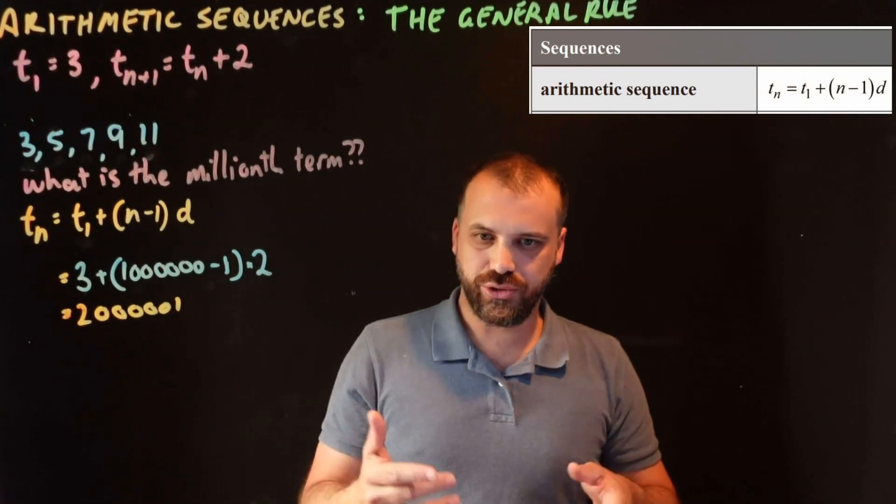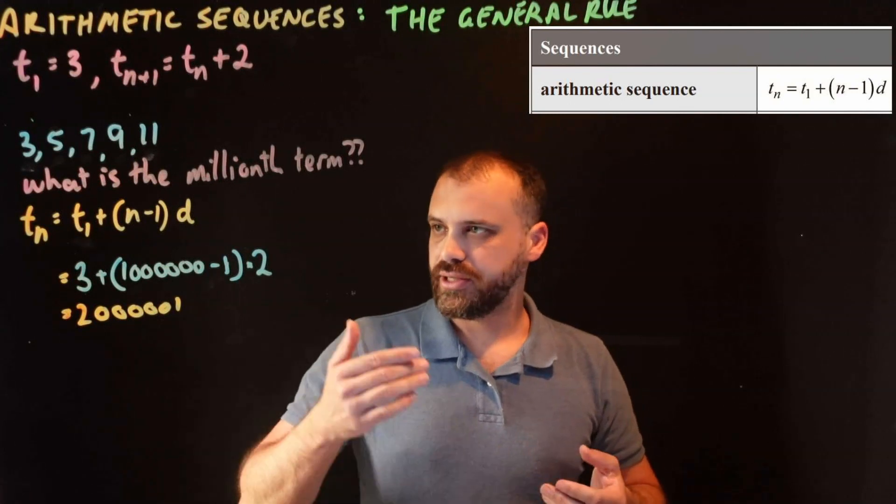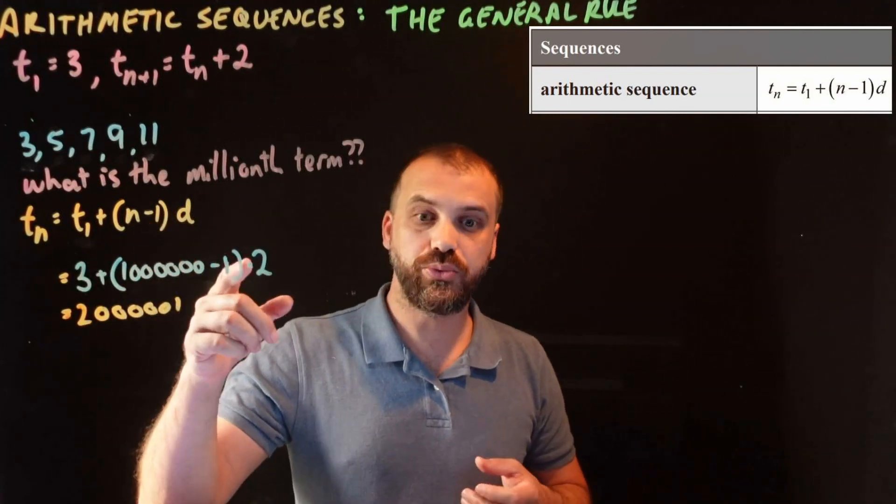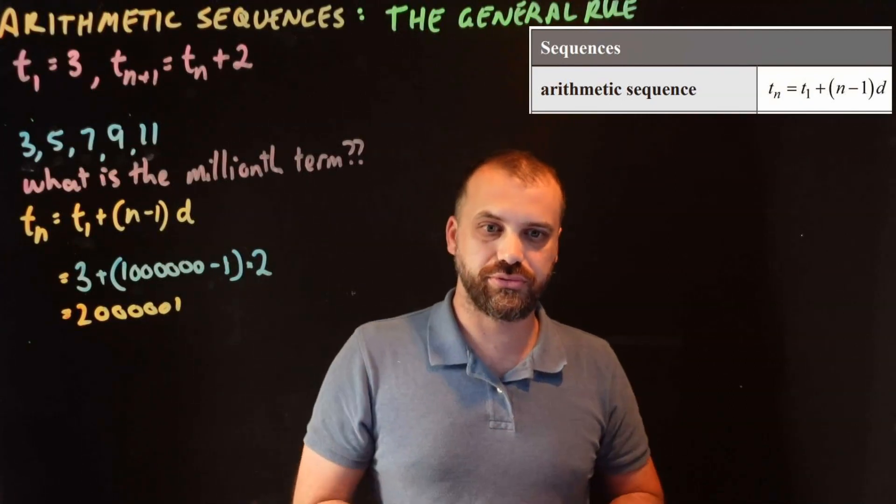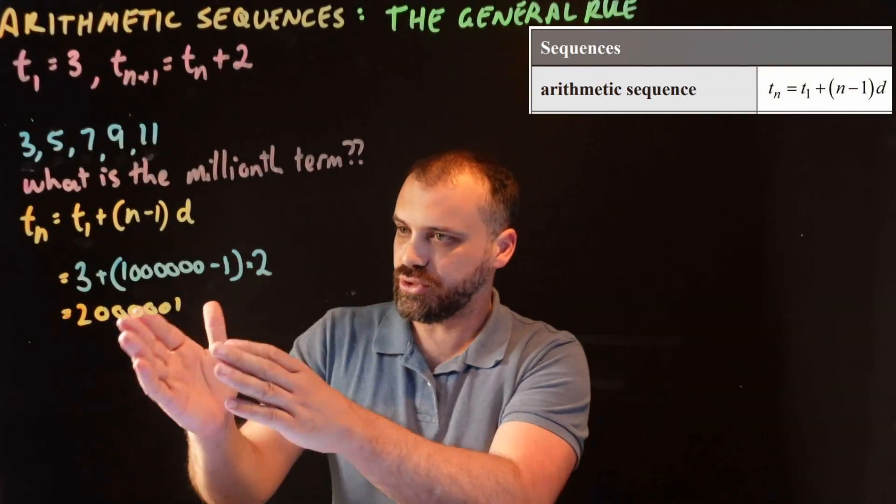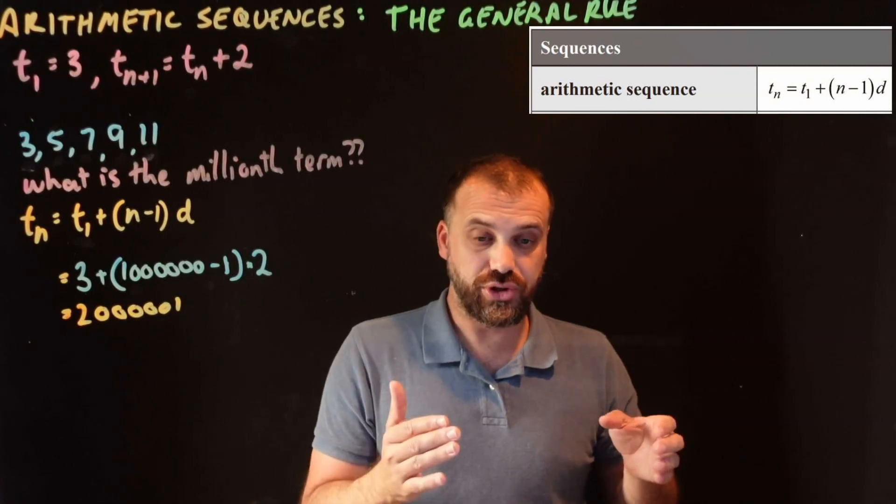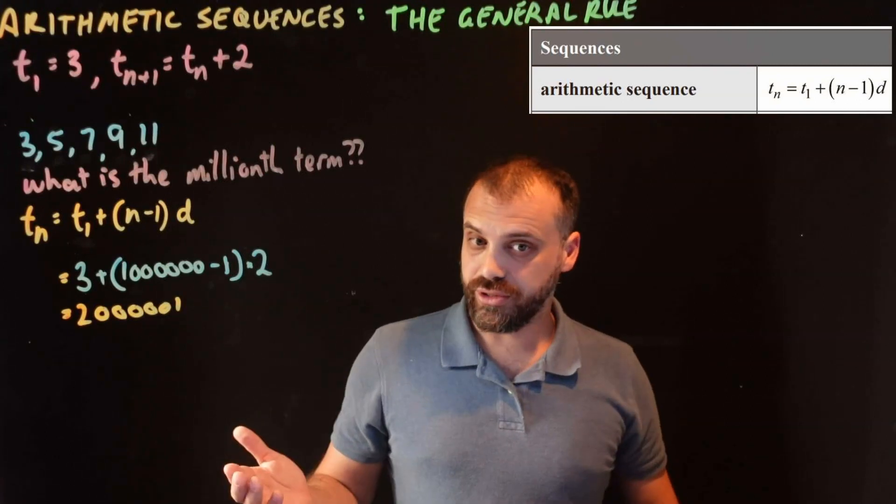This formula is great. It's just plug and play. If you know the first term, if you know what term you want to know, and you know your common difference, you can put those three pieces into it, and you'll know exactly what the nth term is. In this case, the millionth term.